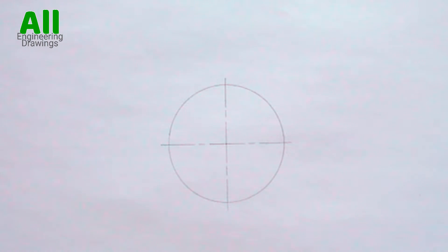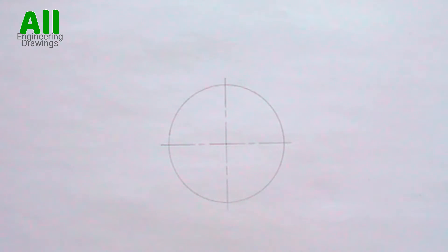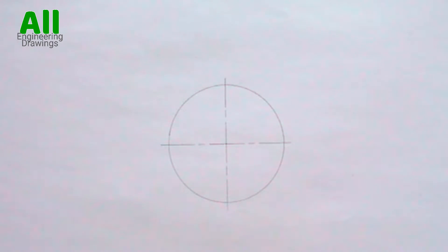In this video, I will be showing you how to draw an octagon within a given circle. The diameter of the circle you draw should be equal to the distance across corners of the octagon you are about to draw.